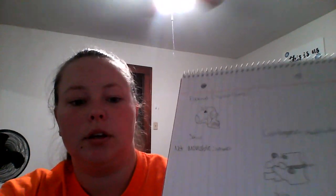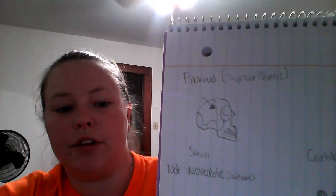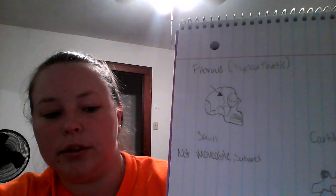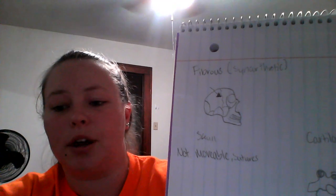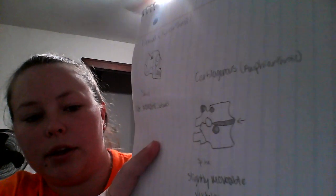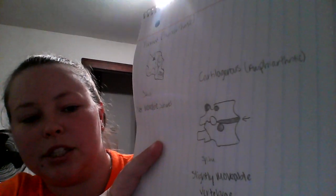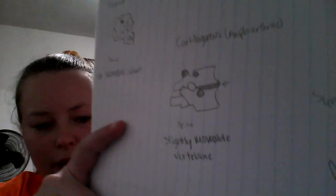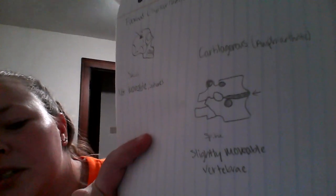I'm going to be talking about the three different groups of joints. For the first one we have the fibrous, synarthrotic joint — I drew the skull — and basically it's a suture and it's non-movable. Then for the second one I have the cartilaginous, amphiarthrotic joint.